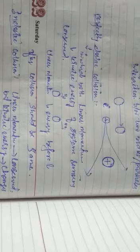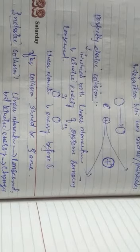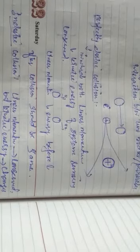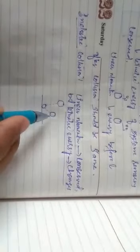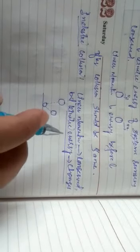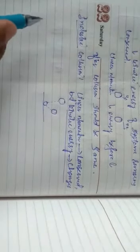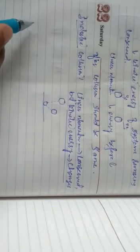A ball dropped from a height that after bouncing does not reach the same height — such a collision is said to be inelastic. Now we have another type called perfectly inelastic collision.